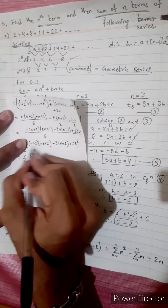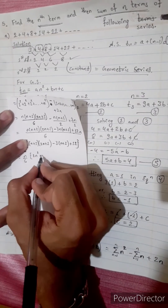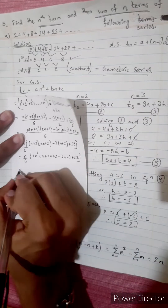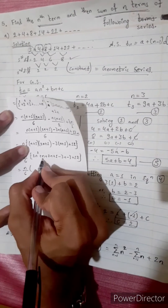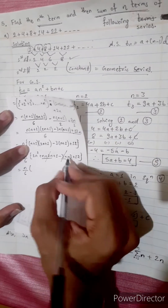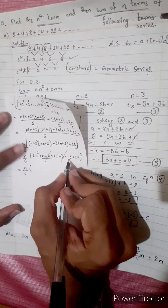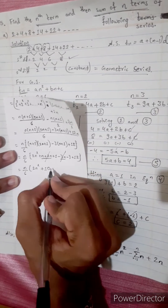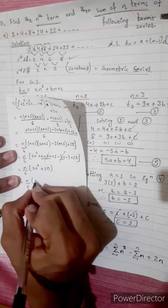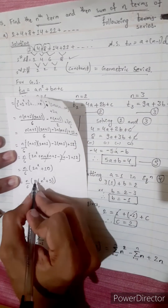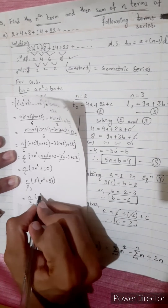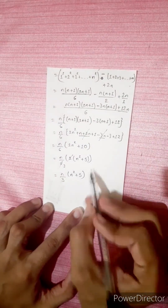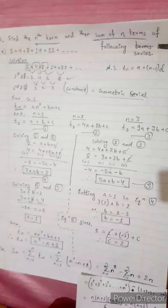Expanding and simplifying: n by 6 times (2n squared plus n minus 3n minus 3 plus 12) simplifies to n by 6 times (2n squared plus 10), taking 2 common gives n by 3 times (n squared plus 5). Therefore Sn equals n(n² + 5) divided by 3. This is our final answer. Thank you, bye bye.